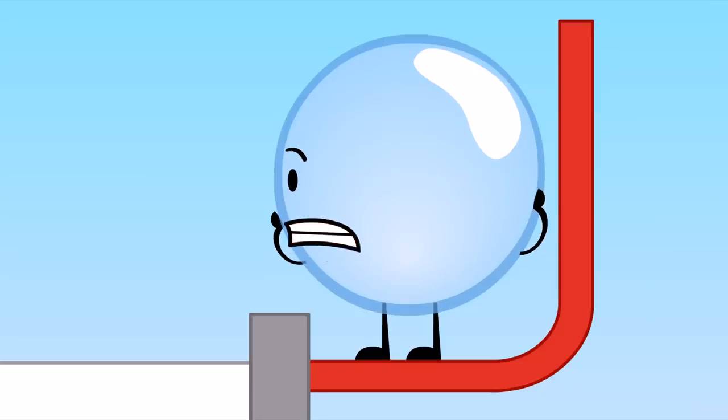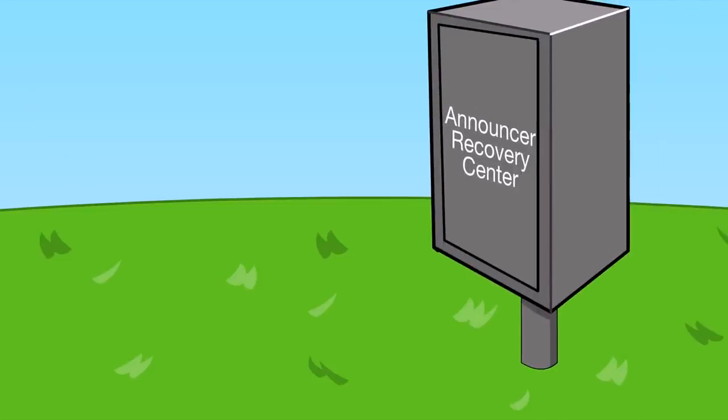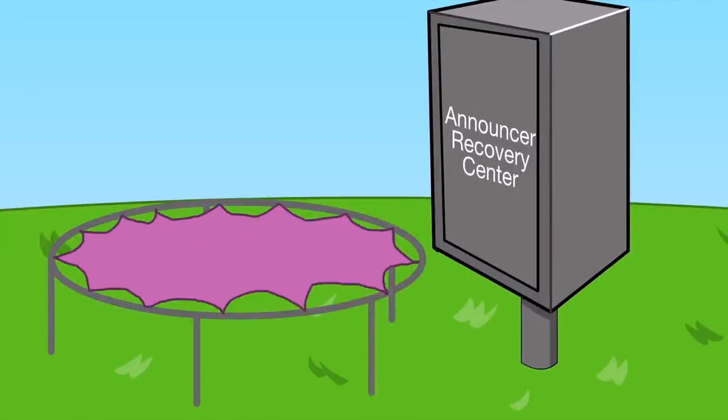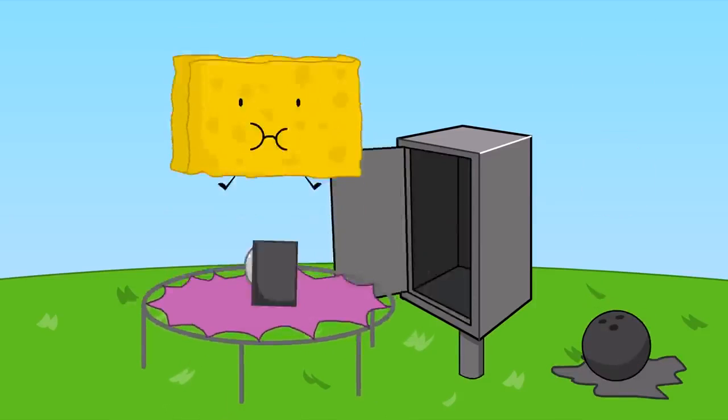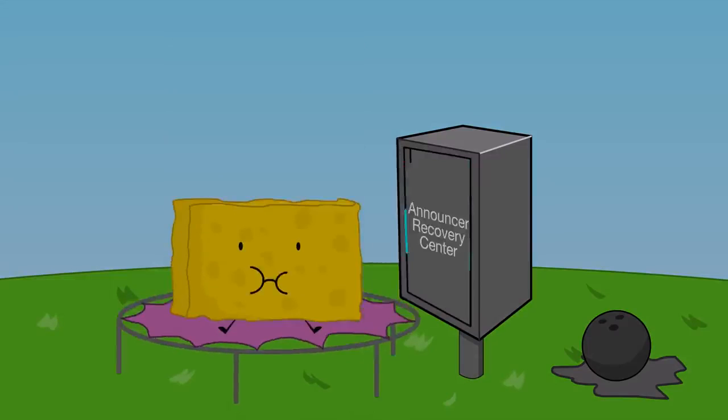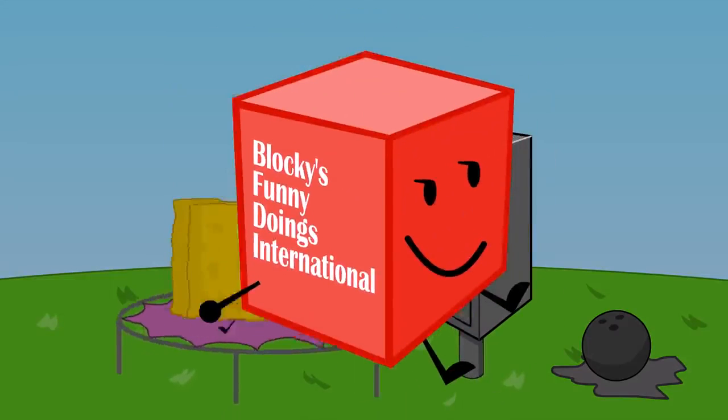The suspense is killing me! Hey guys, for a prank, place an announcer recovery center next to a trampoline, then throw Spongy onto the trampoline. After that, kill the announcer. It's a fun, easy way to create the ultimate prank. This program was brought to you by Blocky's Money Doers International.